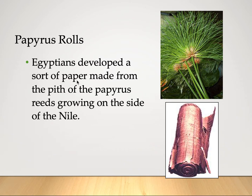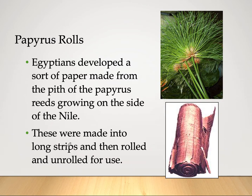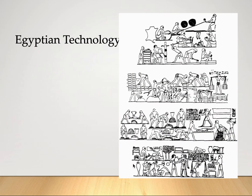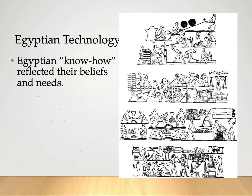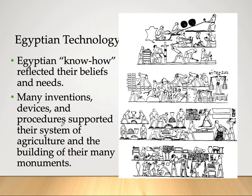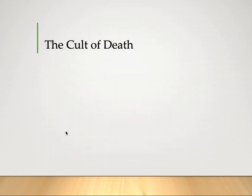They used papyrus rolls — Egyptians were among the first to use paper technology. Egyptians developed a sort of paper made from the pith of papyrus reeds growing on the side of the Nile. These were made into long strips, then rolled and unrolled for use. Egyptian technology reflected their beliefs and needs, and many inventions and procedures supported their system of agriculture and the building of their many monuments.